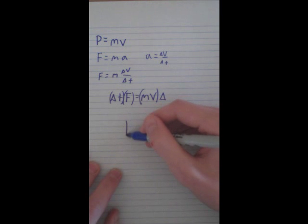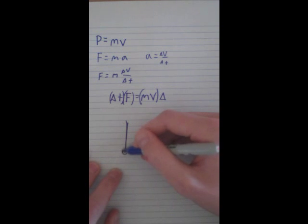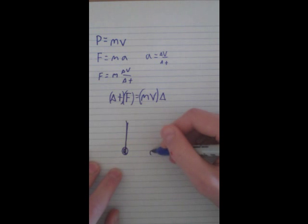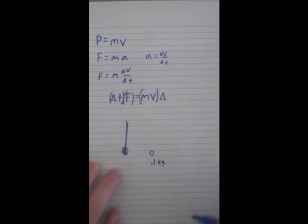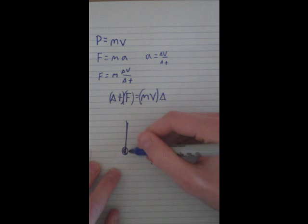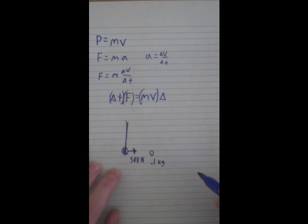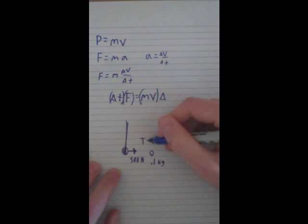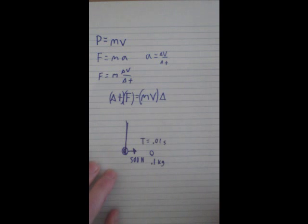So say we have a golf club and a little golf ball. And the golf ball only weighs .1 kg. And this golf club is exerting 500 newtons on this golf ball for .01 hundredth of a second.